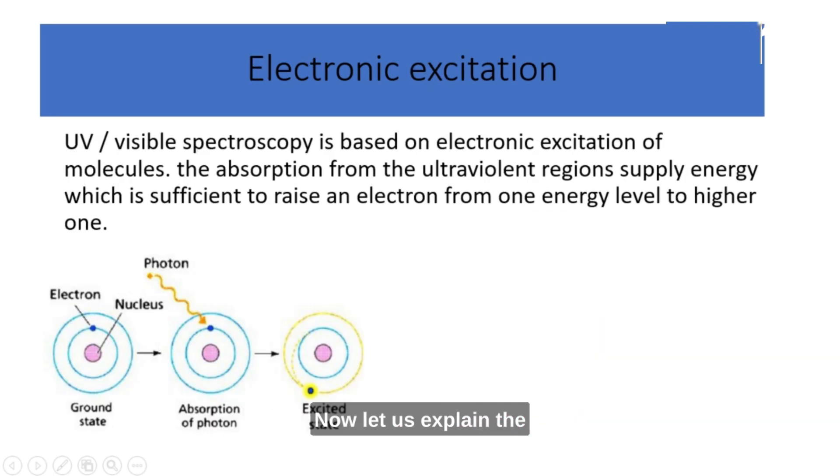Now let us explain the concept of electronic excitation. In a molecule, electrons occupy specific energy levels or orbitals. These energy levels are quantized, meaning electrons can only occupy certain discrete energy states. The lowest energy level is called the ground state.